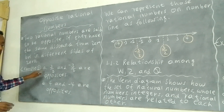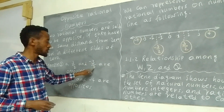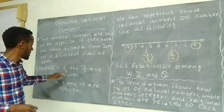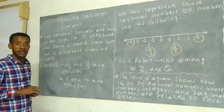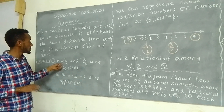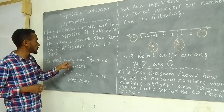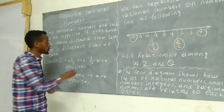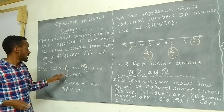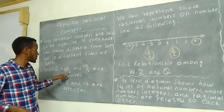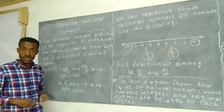Example one: positive 3 over 2 and negative 3 over 2. So positive 3 over 2 and negative 3 over 2 are opposites of each other.